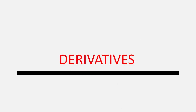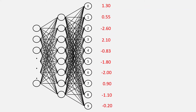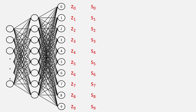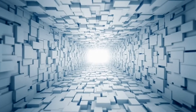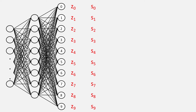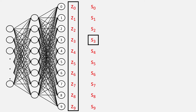Now let's start finding the derivatives for the softmax function with respect to the outputs of the neural network. We will let the outputs of the neural network be called z0 to z9 and the outputs of the softmax be s0 to s9. So what we have to find is ∂s/∂z. This is not very simple, because every output of the softmax function s_i is dependent on every output of the neural network z0 to z9. This means we have to find the derivative of each softmax output with respect to each neural network output.